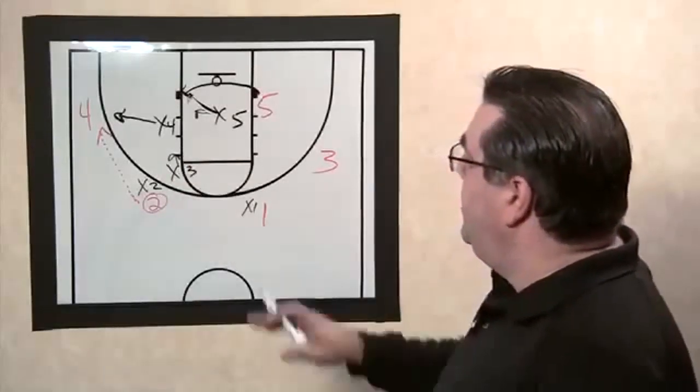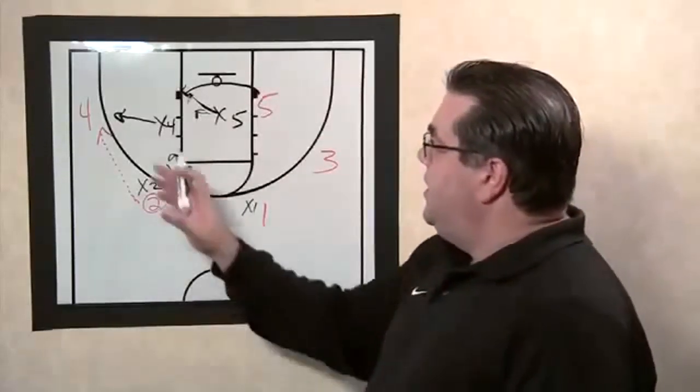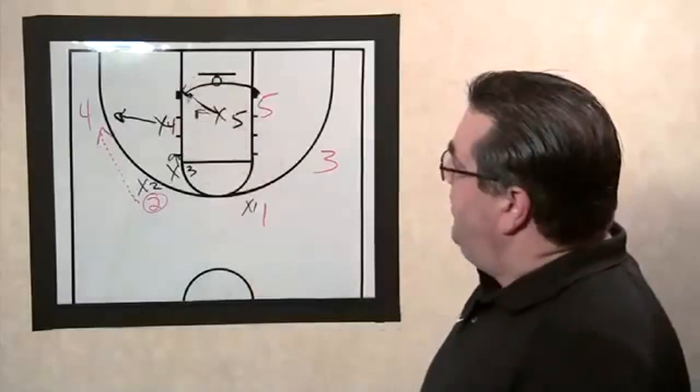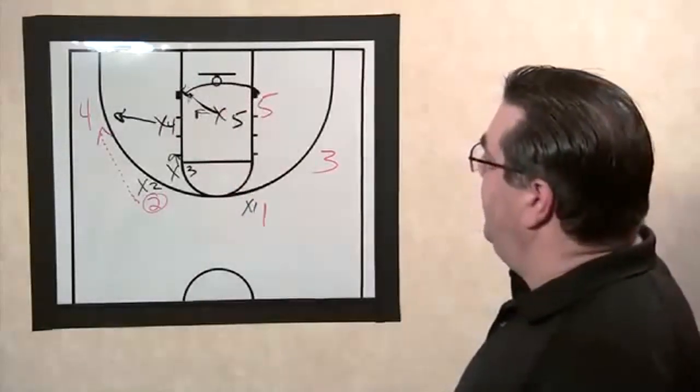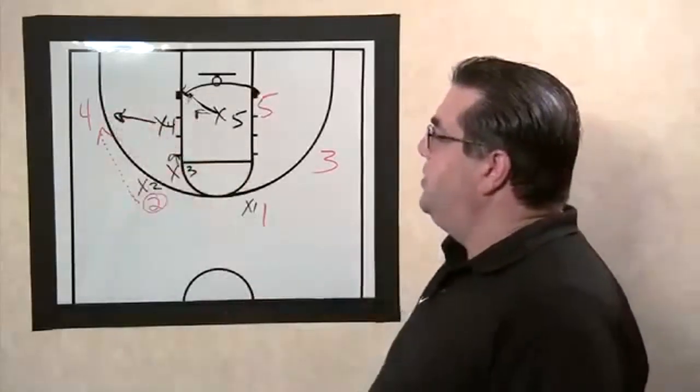We do not want to double with X3 from the top because of someone cutting to the basket. So your wing defender is going to double that pass thrown into the post if it does get into X5, but it's X5's job now to cover that low post since X4 has come out.